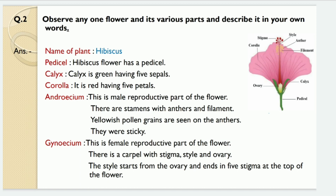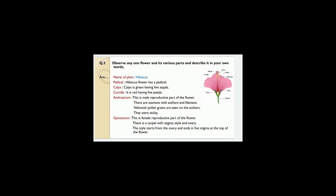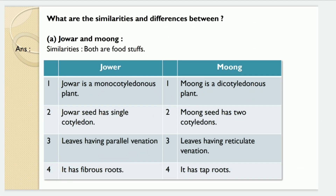Yellowish pollen grains are also seen on the anthers and they are sticky. The gynoecium is the female reproductive part of the flower. There is a carpel with stigma, style and ovary. The style starts from the ovary and ends in five stigmas at the top of the flower. This is all about the parts of hibiscus flower.